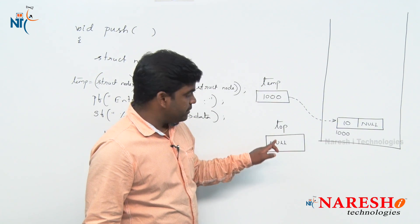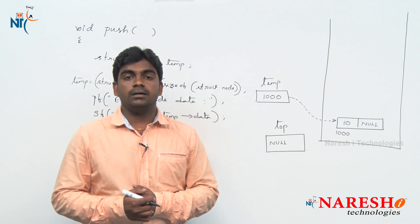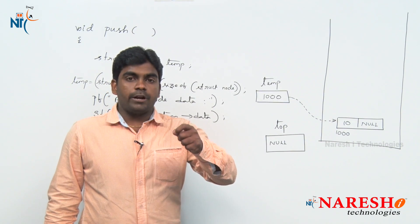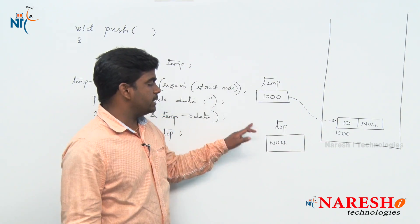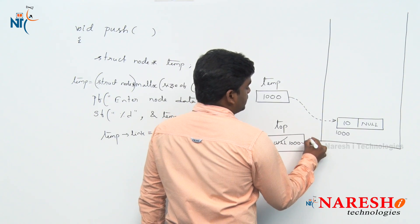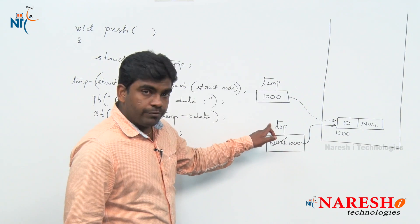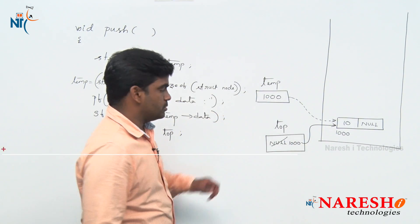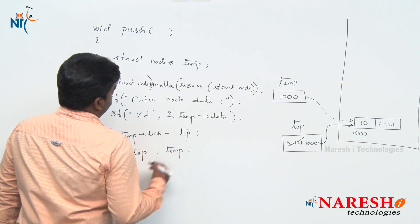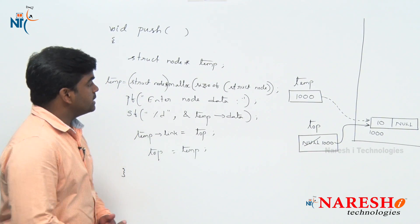Previously top was not pointing to any node. Now nodes are there, so top should always point to the newly created node. The newly created node address is 1000, meaning temp value is 1000. So simply into the top we store the temp value. This is how to push the element onto the stack using single linked list.